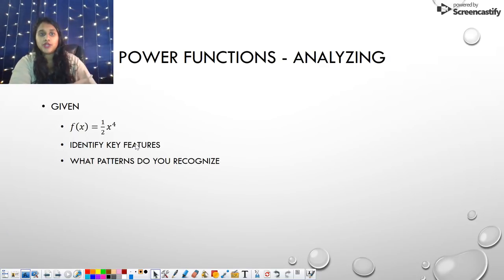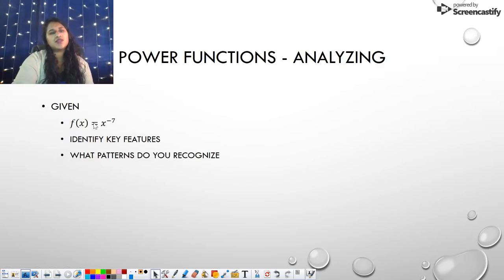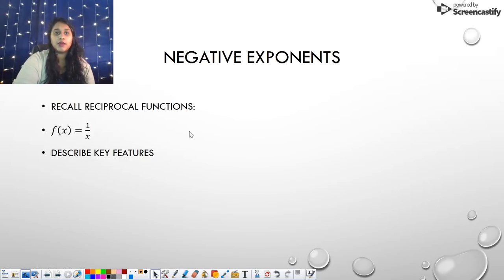But right now, what we're trying to recognize is, what do you think is going to happen? Well, if I have a positive coefficient and an even exponent, an even exponent tells me both arms are going to go the same way, but positive tells me they're both going to go up. So let's check that graph. Boom, we are correct. Here's my other one. This one's a little funky, but this is an odd exponent. This is a negative exponent.